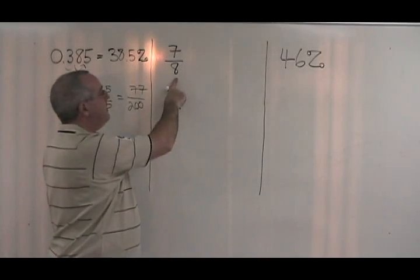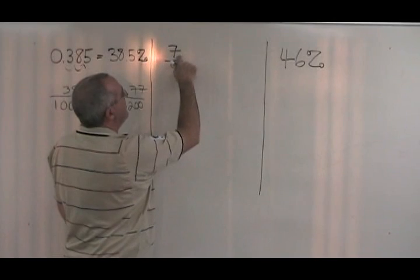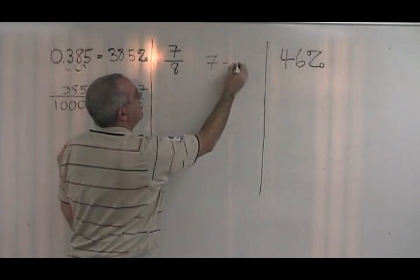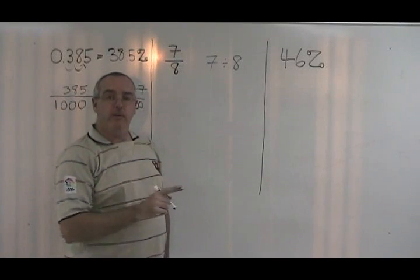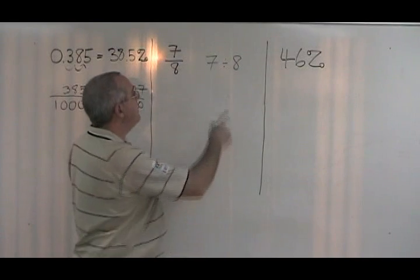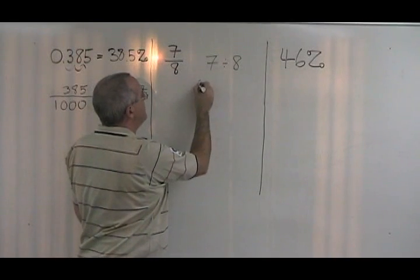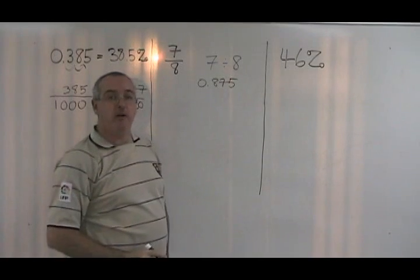To convert a fraction to a decimal, we take the numerator and we divide it by the denominator. We can do this in our calculator, or if required, we can do it with pencil and paper with long division. 7 divided by 8 is equal to 0.875. We now have our decimal.